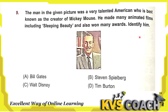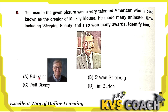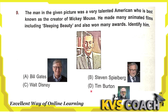Next question: the man in the given picture was a very talented American, best known as the creator of Mickey Mouse. He made many animated films including Sleeping Beauty, and also won many awards. Identify him. Option A is Bill Gates — an American businessman. Option B is Steven Spielberg — an American filmmaker. Option C is Walt Disney. Option D is Tim Burton — an American animator. So the right answer is option C, Walt Disney.